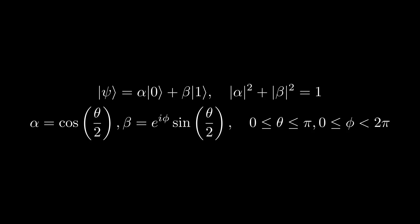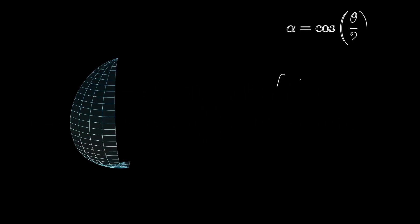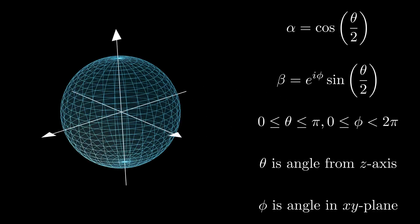Using theta as the polar angle and phi as the azimuthal angle, we can map any pure state to a point on the surface of a sphere of radius 1. This sphere is known as the Bloch sphere.